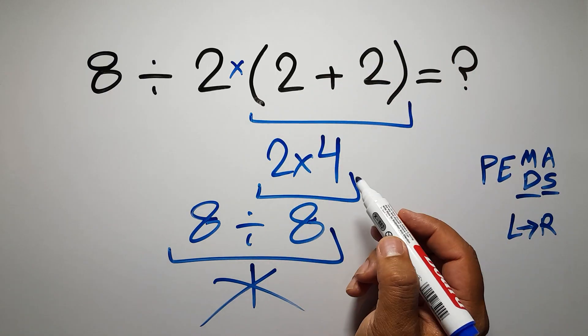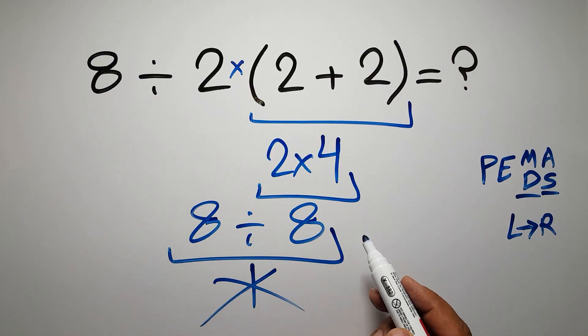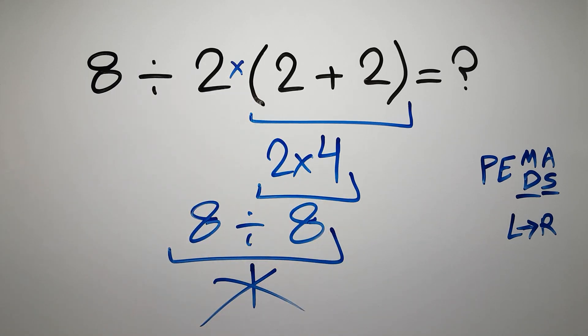So first we have to do this parentheses, then this division, and finally this multiplication. If you do this multiplication before this division, it is wrong.